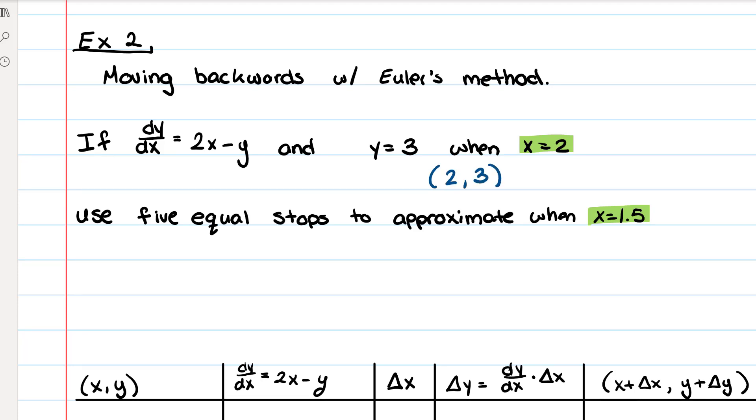So we aren't explicitly given delta x, so we have to go ahead and find delta x. In order to find delta x, you're going to do the final, which is where you want to end up, minus the initial...